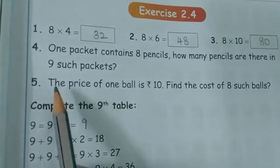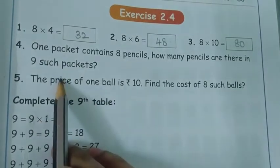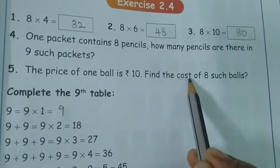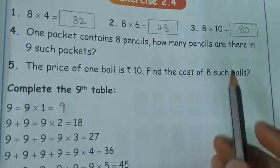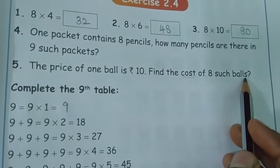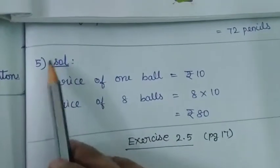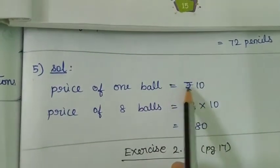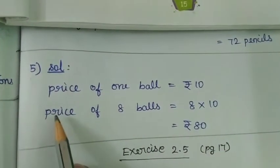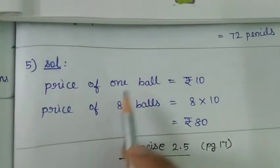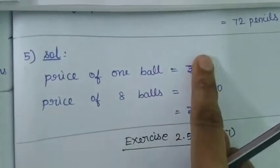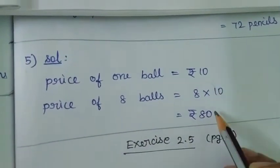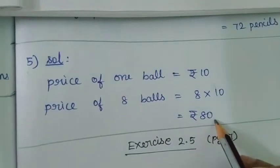Next, fifth question: the price of one ball is 10 rupees. We want to find out the cost of 8 balls. Fifth question solution: price of one ball equals rupee 10. Price of 8 balls — we want to multiply the two given numbers. 8 tens are 80. Here given 10, so put 10 — that means 80 rupees.